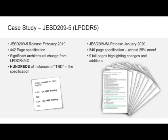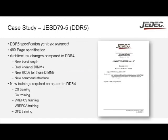You also have to consider things that are unknown to begin with. For example, the DDR5 specification — everybody knows it's coming and everybody's excited about it, but it still hasn't actually been published yet. Today we're on revision 0.99F, a 499-page document with significant architectural changes from DDR4. There are a bunch of new training algorithms to consider for DDR5 compared to DDR4: chip-select training, command address training, new VREF trainings, and DDR5 introduces DFE to the device — something that wasn't comprehended in DDR4. So in an SoC, what actually changes and how does it adapt to all these different changes?